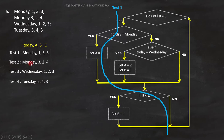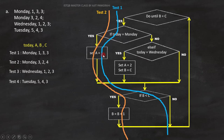Now let's analyze test 2: Monday, 3-2-4. Today is Monday, so this condition will become true. Next, set A equals to 1 will execute. And since B is less than C, this condition will become true. So this is the path we will cover by test 2.